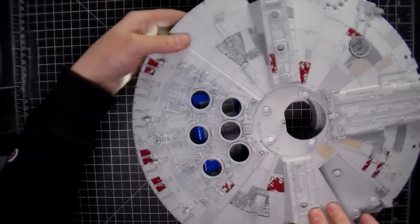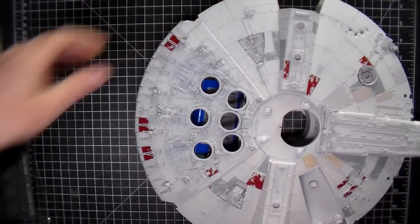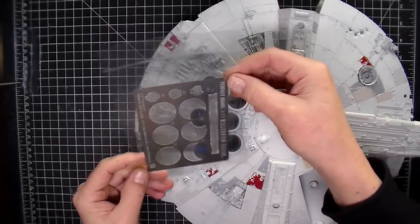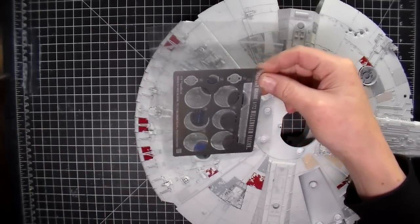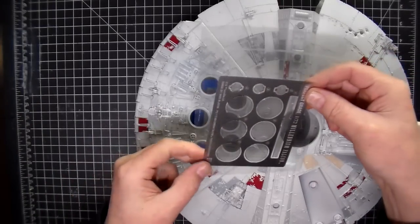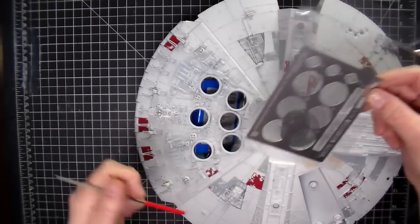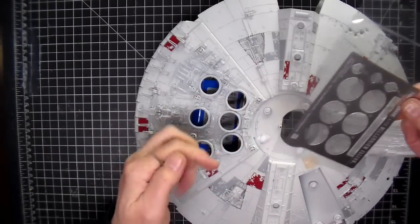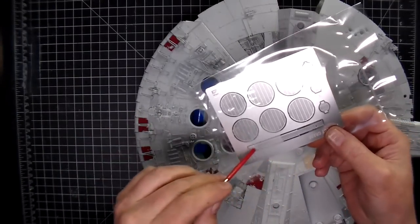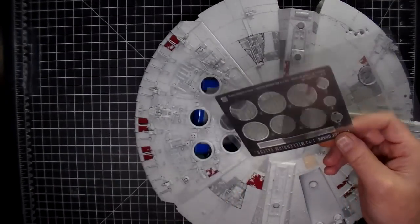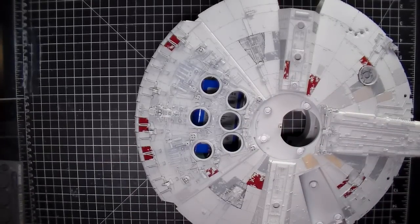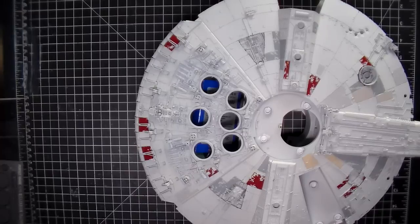So, for part seven, what I'm going to do is I'm going to be doing the photo etch that comes with the kit. There are the six grill pieces for these exhaust vents, and then there's three that go here and then of course the one that goes around the side of the cockpit. So I want to thank you guys for watching and thank you guys for subscribing and I'll see you for part seven.